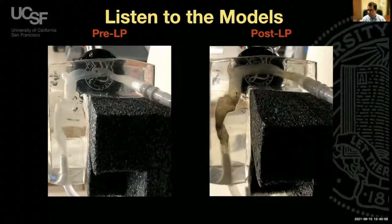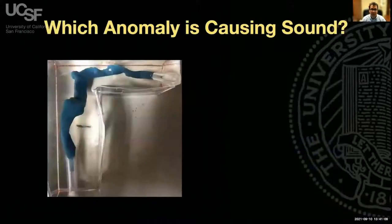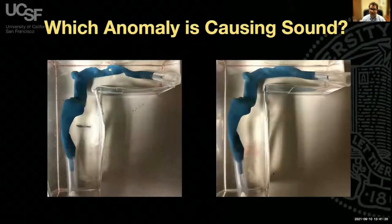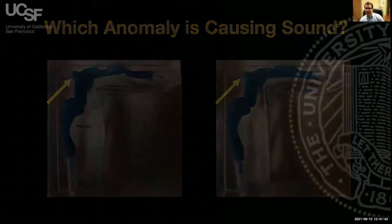The sound recorded from the pre-lumbar puncture model is clearly audible, while the post-lumbar puncture model produces no sound. We can use 3D printed models to actually generate pulsatile tinnitus sounds. We can also use these models to identify which anatomical abnormality causes sound when multiple are present. This patient has both a stenosis and a diverticulum. Printing a model without the stenosis but with the diverticulum and finding no sound confirms the stenosis—not the diverticulum—is generating the sound in this patient.